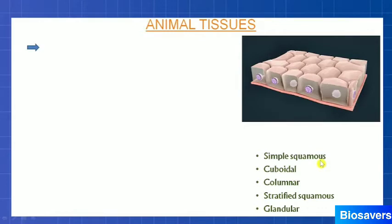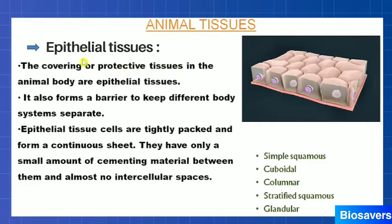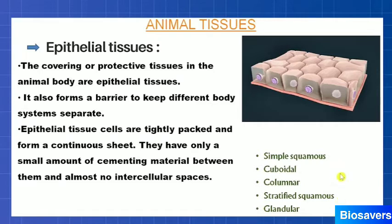The very first type of animal tissue is the epithelial tissue. Epithelial tissue is also called covering or protective tissue, because it covers almost all the parts of the animal body and protects them. This epithelial tissue is present on the outer layer, protecting the outer layer of organs. These epithelial tissue cells are tightly packed with no intercellular space between them. Based on their structure and function, they are further categorized into various types: simple squamous, cuboidal, columnar, stratified squamous, and glandular epithelial tissue.